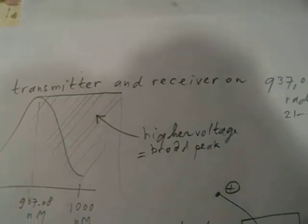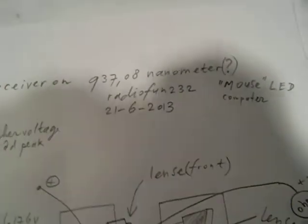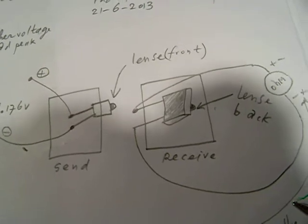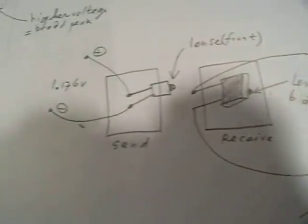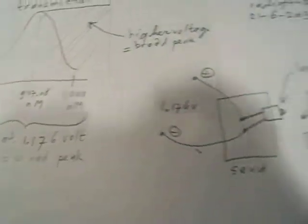We all know the computer mouse, and inside the computer mouse there is a small light-emitting diode and also a receiver from the signal.